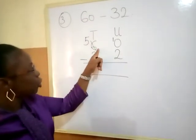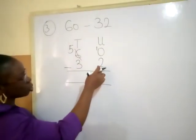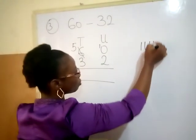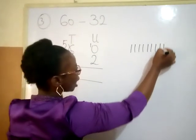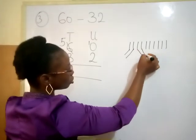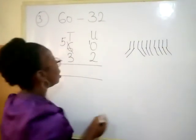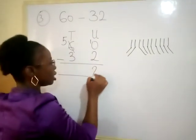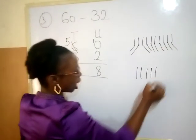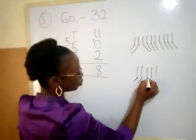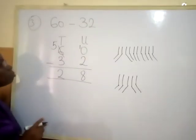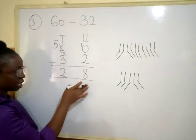So I'll count ten, take away two. Count five, take away three. Ten take away two gives me eight. Now come to tens. Count five, take away three. Five minus three gives me two. So sixty minus thirty-two will give me twenty-eight.